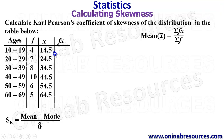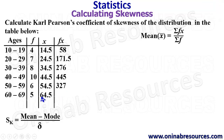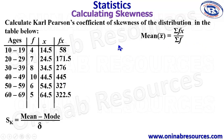4 times 14.5 gives 58. 7 times 24.5 gives 171.5. 8 times 34.5 gives 276. 10 times 44.5 gives 445. 6 times 54.5 gives 327. From here, we find sigma — that is the sum of fx and the sum of f — so we are adding these two columns.